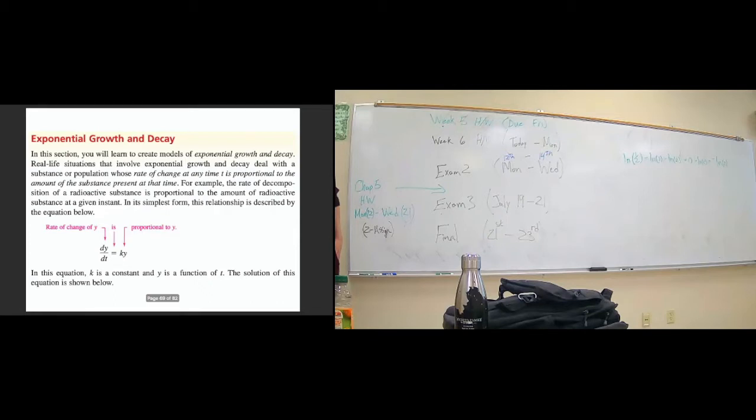From here, when we exponentiate both sides, we get y is equal to some constant plus kt as a power of e. We can rewrite this as another constant, and we get that in exponential growth or decay models, y is equal to some constant times e raised to another constant times time.